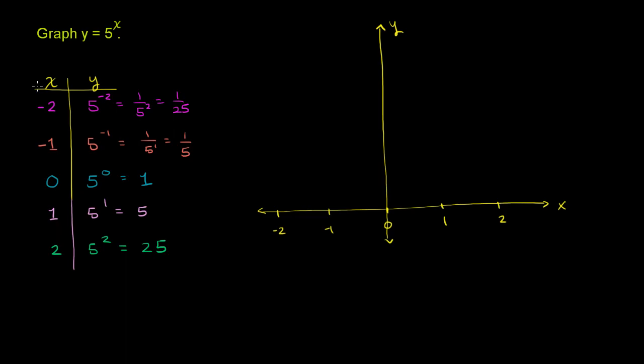Let's plot the points. For the y axis, this is 5, 10, 15, 20, and 25 would be right where I wrote the y. Now x is negative 2, y is 1/25th. 1/25th is going to be really, really close to the x axis, about there. It's not going to be on the x axis since 1/25th is greater than 0, but it's going to be really close.